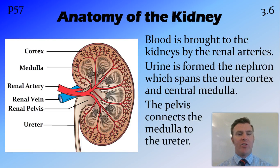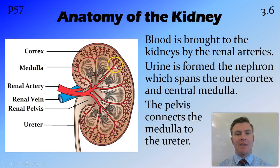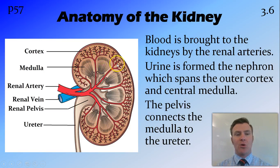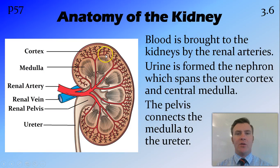Firstly, a brief overview of the kidney. Blood comes into the kidney through the renal artery and then splits into a whole heap of arterioles and capillaries. Those capillaries are in the cortex where they are wrapped around the nephron, the nephron being the functional unit of the kidney. The nephron spans the cortex on the outside and has a part called the loop of Henle that dips down into the medulla, which is very salty. The urine goes through that nephron, gets filtered out, and collects in the renal pelvis, then drains down the ureter to the bladder for excretion.